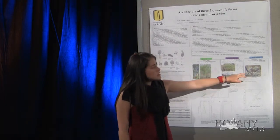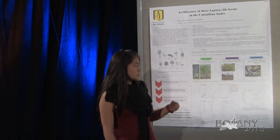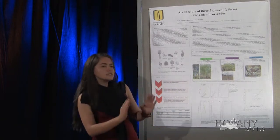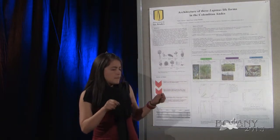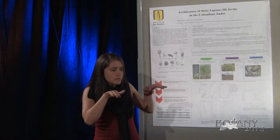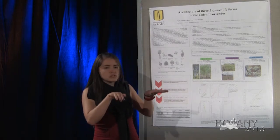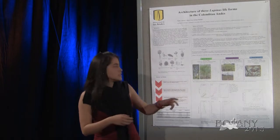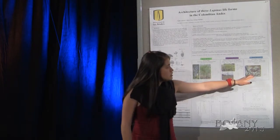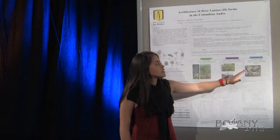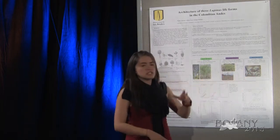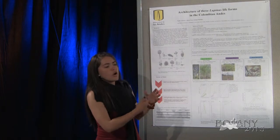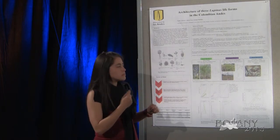In the basal rosette, Lupinus alopecuroides is following Leeuwenberg's model, where there are equivalent orthotropic branches. Although they are prostrate, they continue to be orthotropic because they maintain a spiral phyllotaxis. And an acrotonic branching — this plant, Lupinus alopecuroides, is producing branches only in the apical part of the main stem.